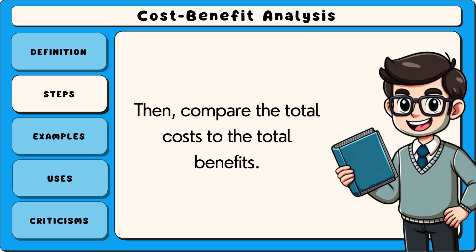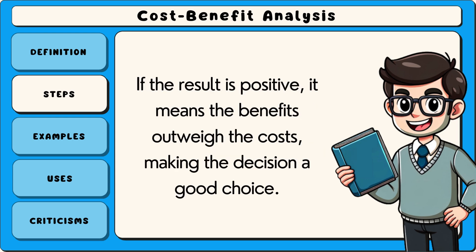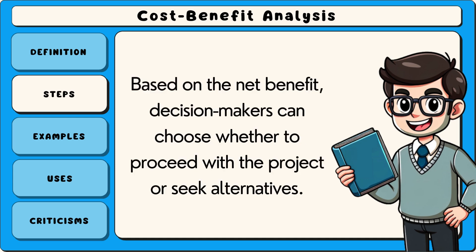Then compare the total costs to the total benefits. This involves subtracting the total costs from the total benefits to calculate the net benefit. If the result is positive, it means the benefits outweigh the costs, making the decision a good choice. Finally, make a decision. Based on the net benefit, decision makers can choose whether to proceed with the project or seek alternatives.